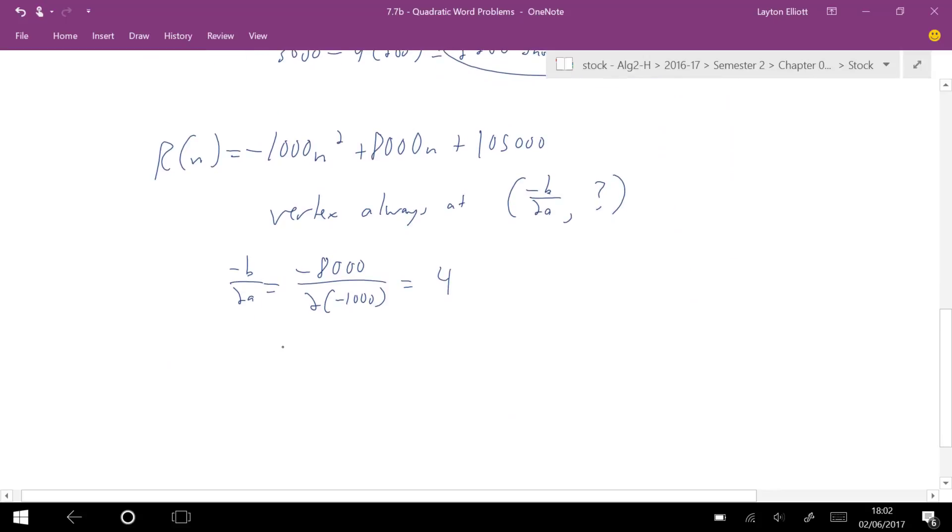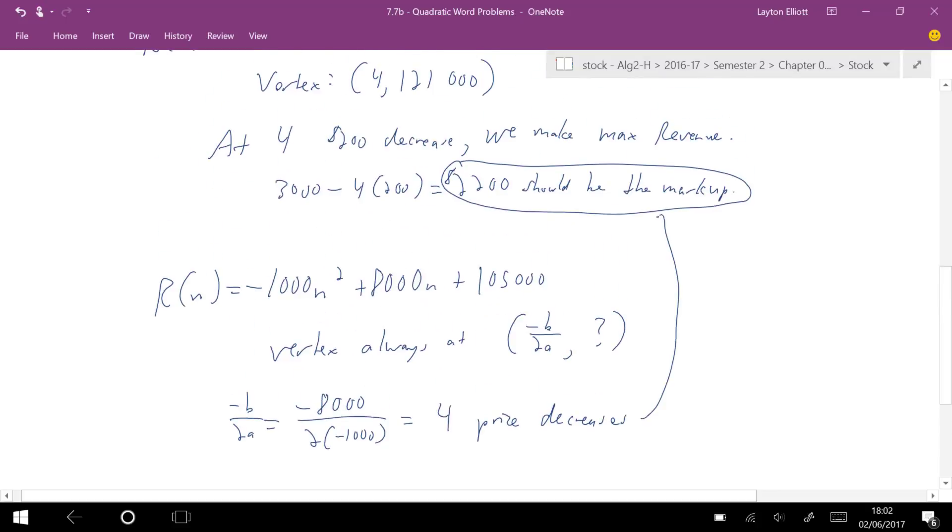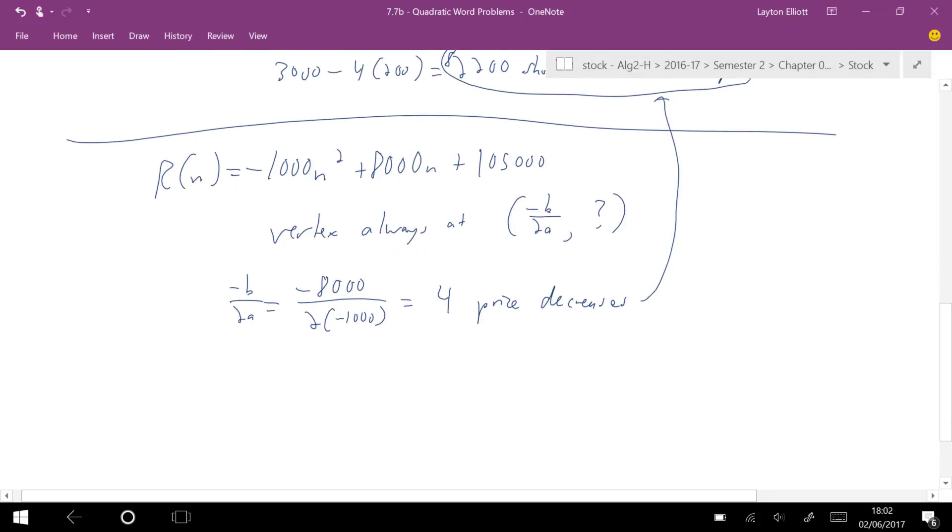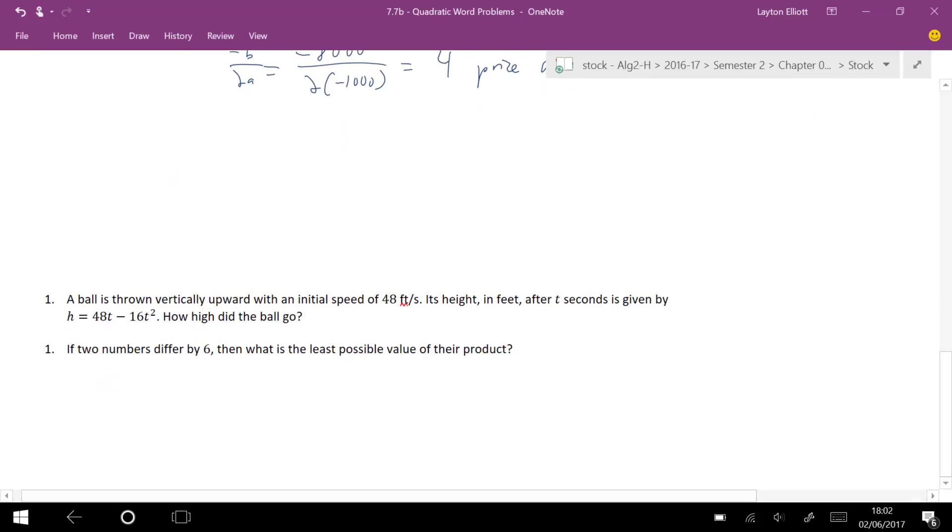And then if I want to figure out what the Y value is, I just do R of 4. But the question didn't even want that. It just wants to know for price decreases. And then I can go ahead and do the same sort of analysis I did right here to figure out that $2,200 should be the markup. So either way, I kind of like finding the vertex because it makes sense. It's good to practice with completing the square. But a good shortcut is to do that the vertex is always at negative B over 2A.